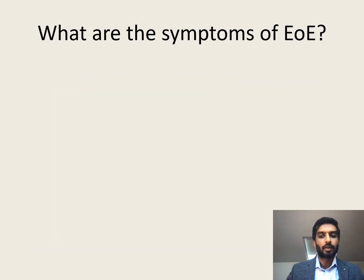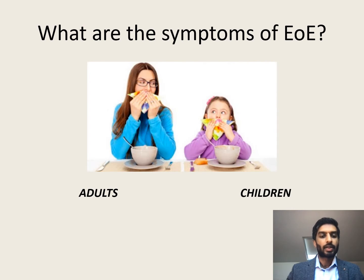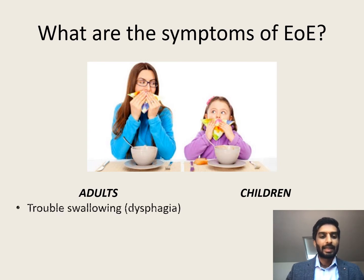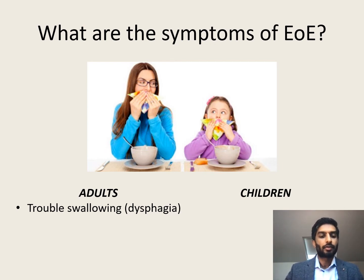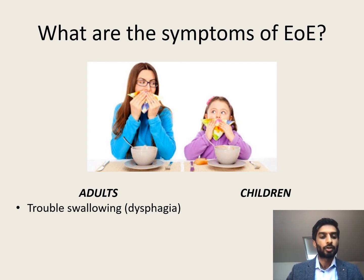What are the symptoms of EOE? The symptoms vary quite significantly based on whether the condition is present in an adult or a child. In adults the most prominent symptom is trouble swallowing — in medical terminology we call this dysphagia. Patients may feel this in different ways: some feel as though food gets stuck as they try to swallow or as it travels down the neck or chest; others may feel food simply takes a long time to get down and they might have to chew excessively.